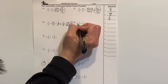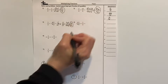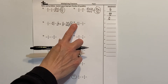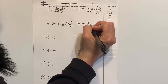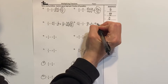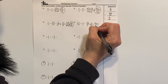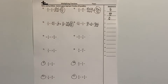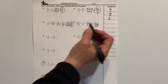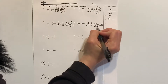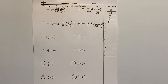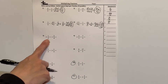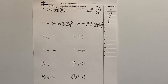Now I've got a mixed number times a fraction again. I'll multiply then add: 3 times 3 is 9, plus 1 is 10, so I've got 10 thirds. Then 10 thirds times 1 half — 1 times 10 is 10, and 3 times 2 is 6 — so I've got 10 sixths.